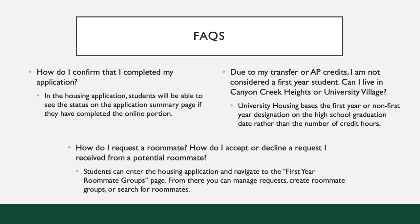Due to my transfer or AP credits, I am not considered a first-year student. Can I live in Canyon Creek Heights or University Village? University Housing bases the first-year or non-first-year designation on the high school graduation date rather than the number of credit hours. If you are graduating in May or June of 2021, you are only eligible to live in University Commons.